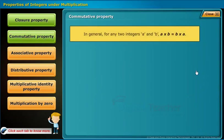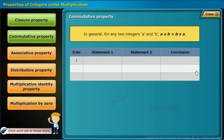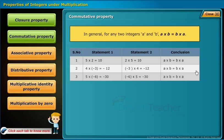Commutative property defines that for any two integers a and b, a into b equals b into a. For example: 5 into 2 equals 10 and 2 into 5 equals 10, confirming a into b equals b into a. The same holds for the second and third statements. Therefore, the table follows commutative property under multiplication.